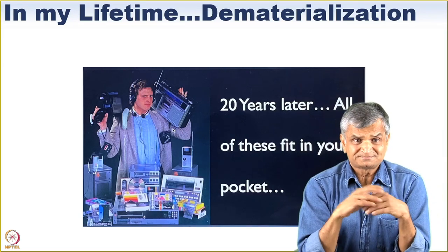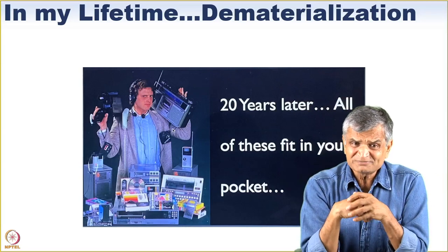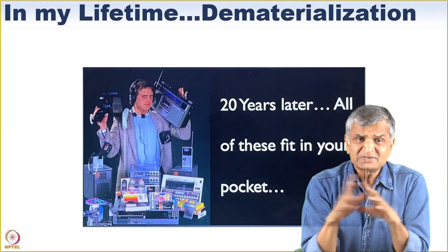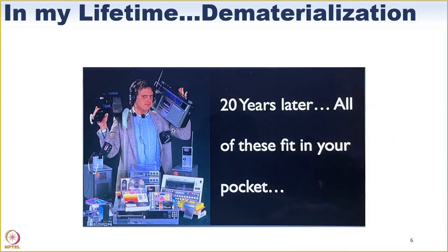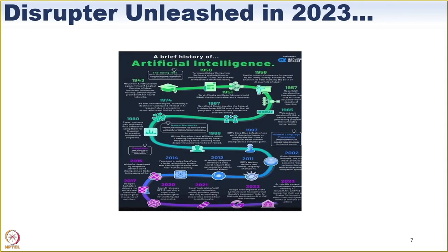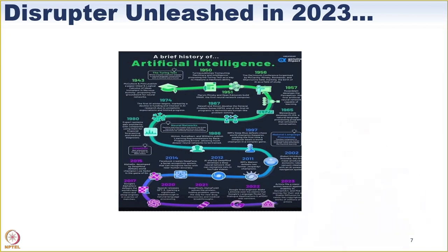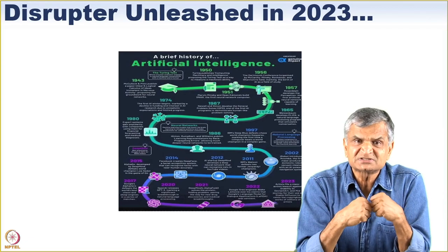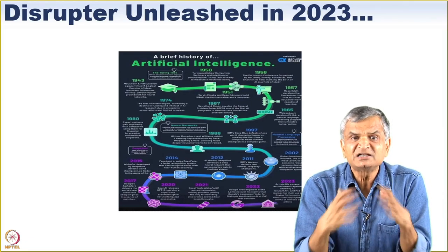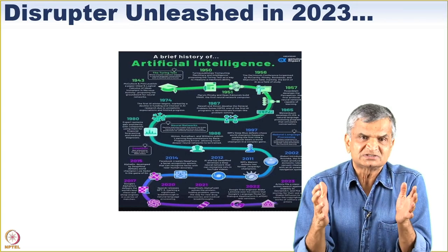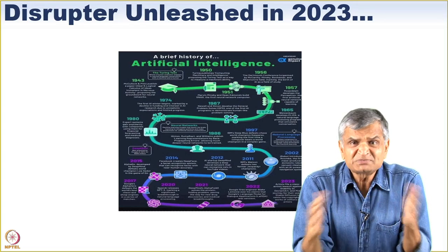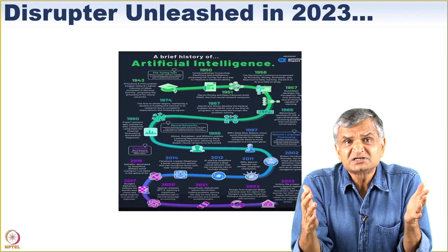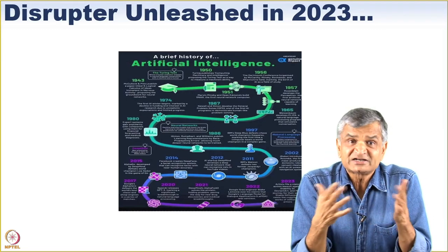By the end of this talk, we are going to see where we are in this dematerialization environment. The Six D's are things we now have to apply to any new technology disruption being unleashed on the world. And the disruptor being unleashed in 2023 is artificial intelligence.